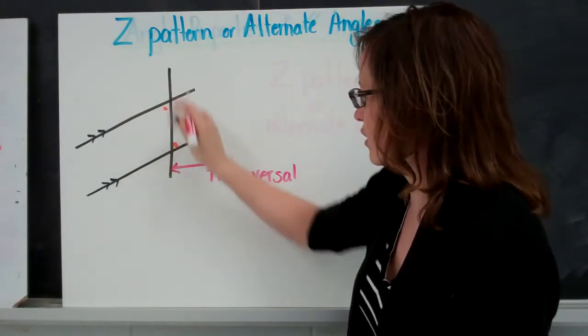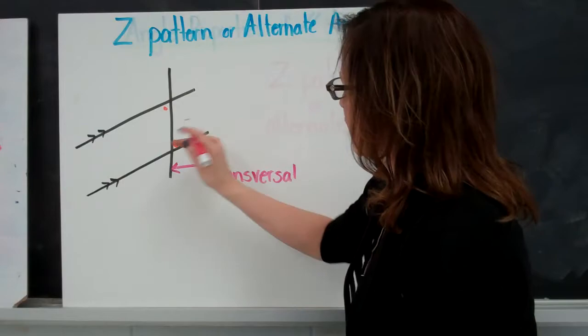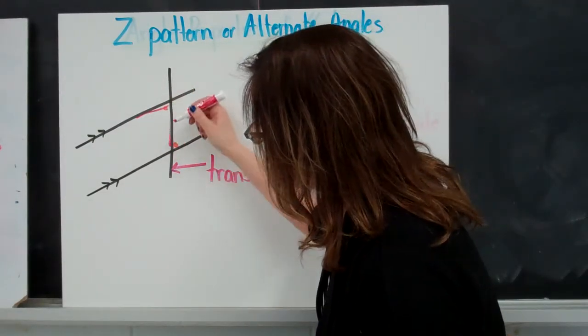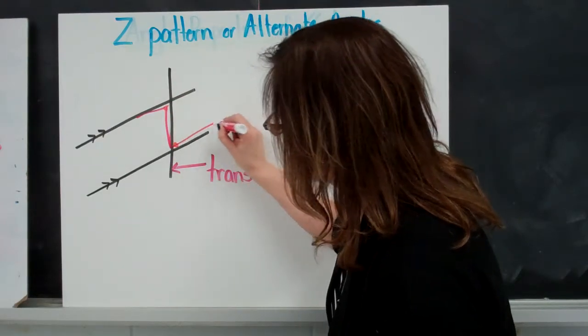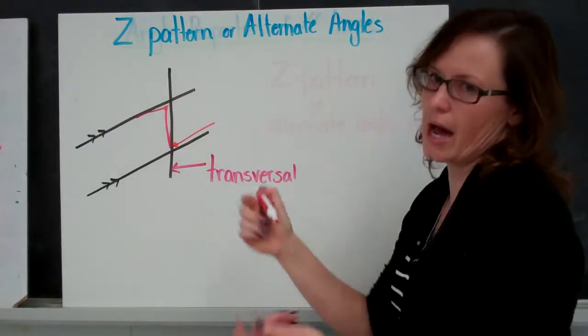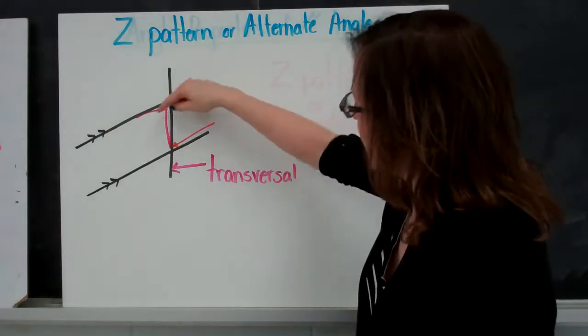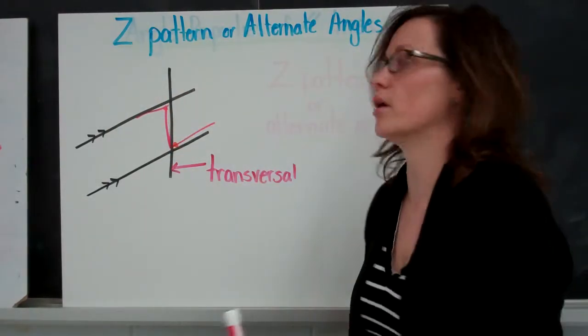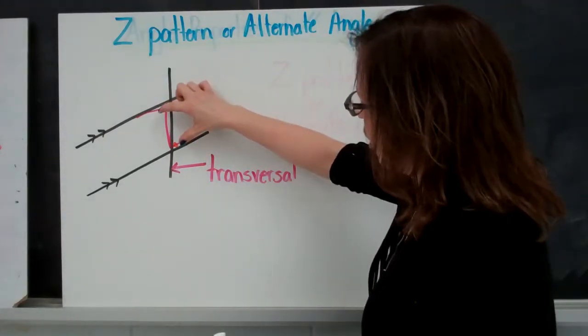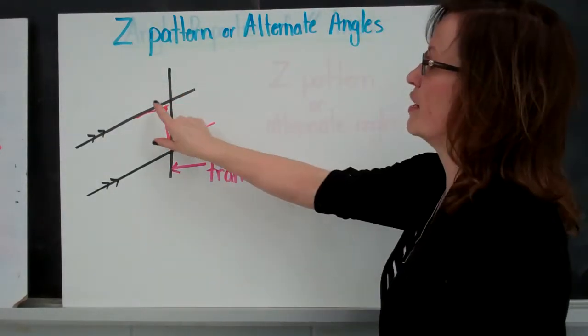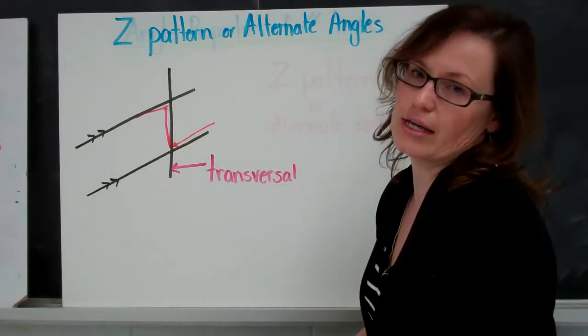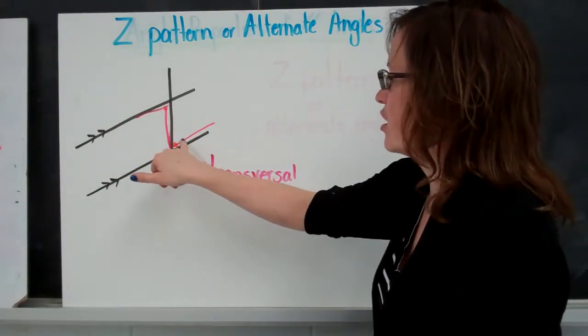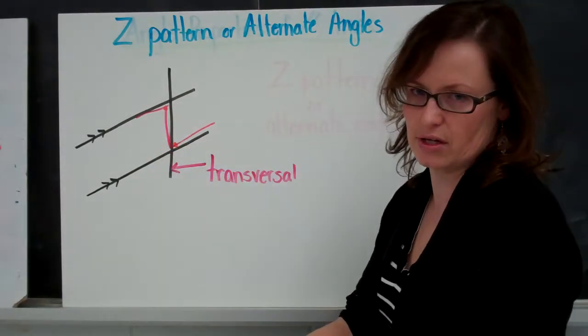If we look into this image, we can find the letter Z, which gives us the Z pattern rule. Within the Z, there are two angles. The Z pattern rule says that the alternate angles, or the angles within the Z, are equal. So if this angle is 70 degrees, then this angle is also 70 degrees.